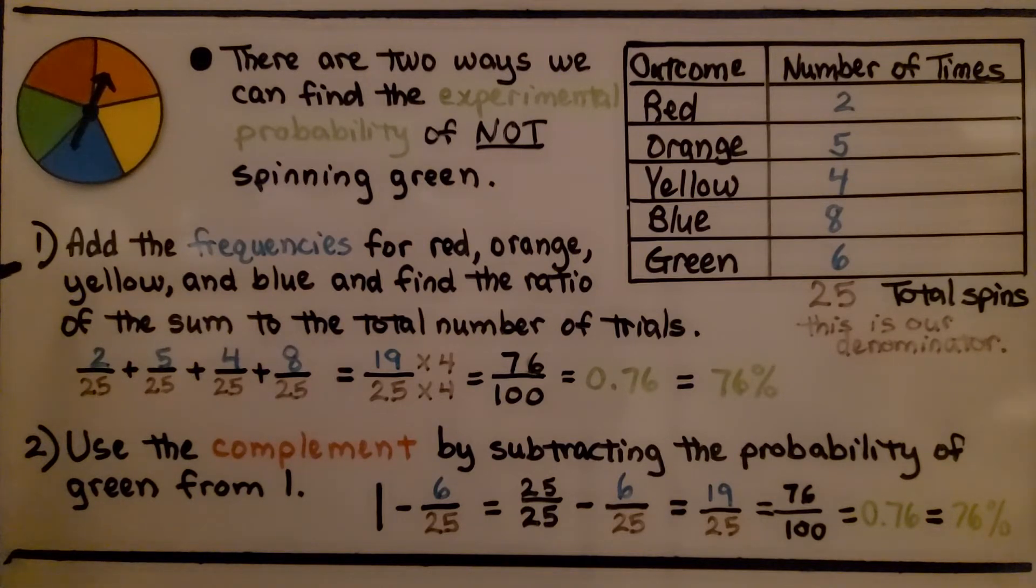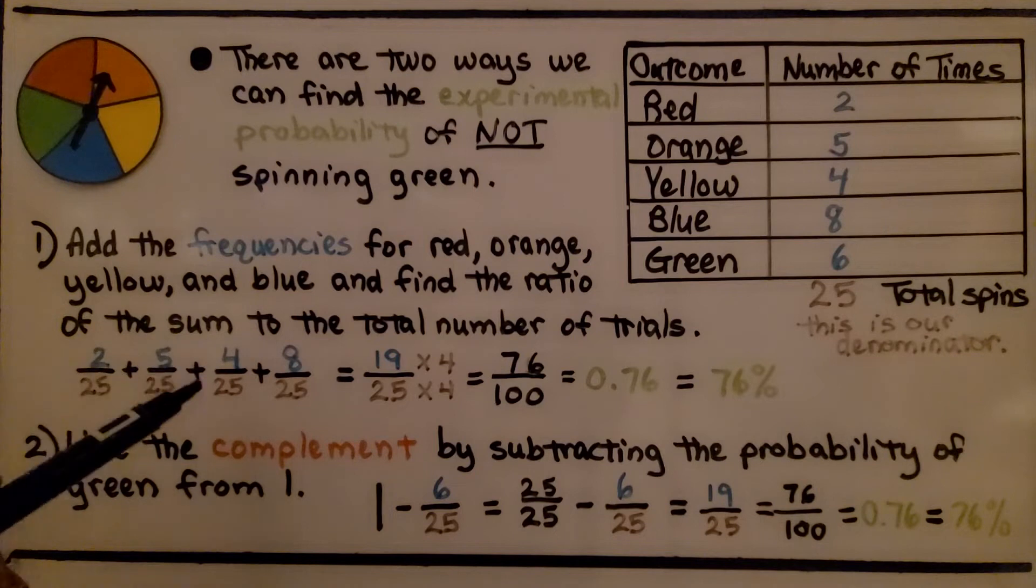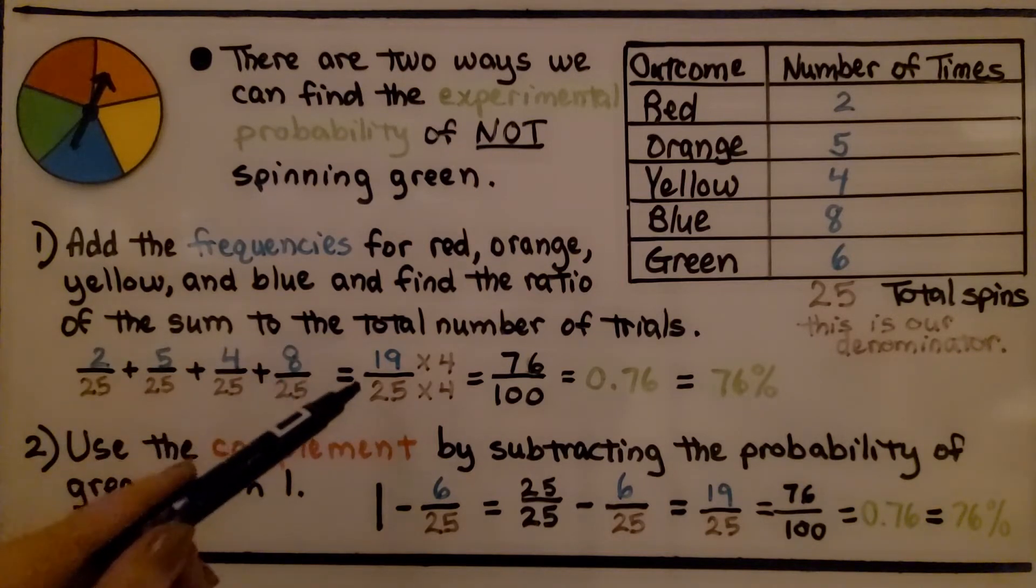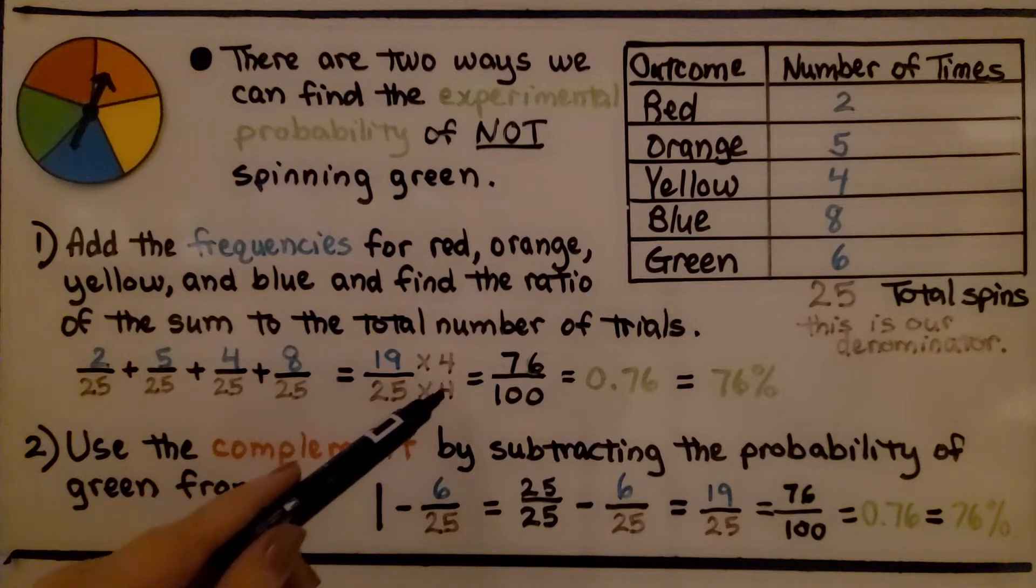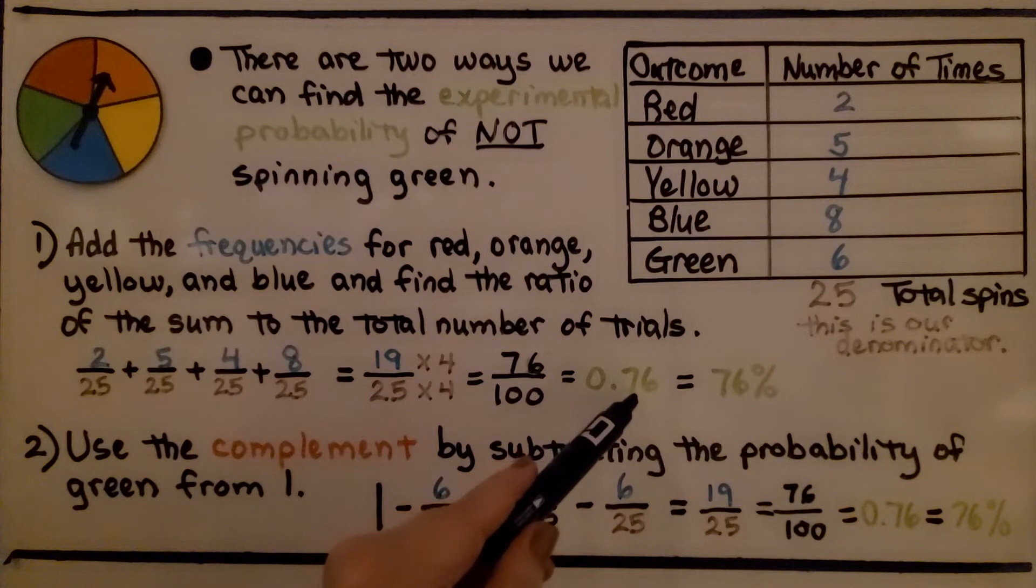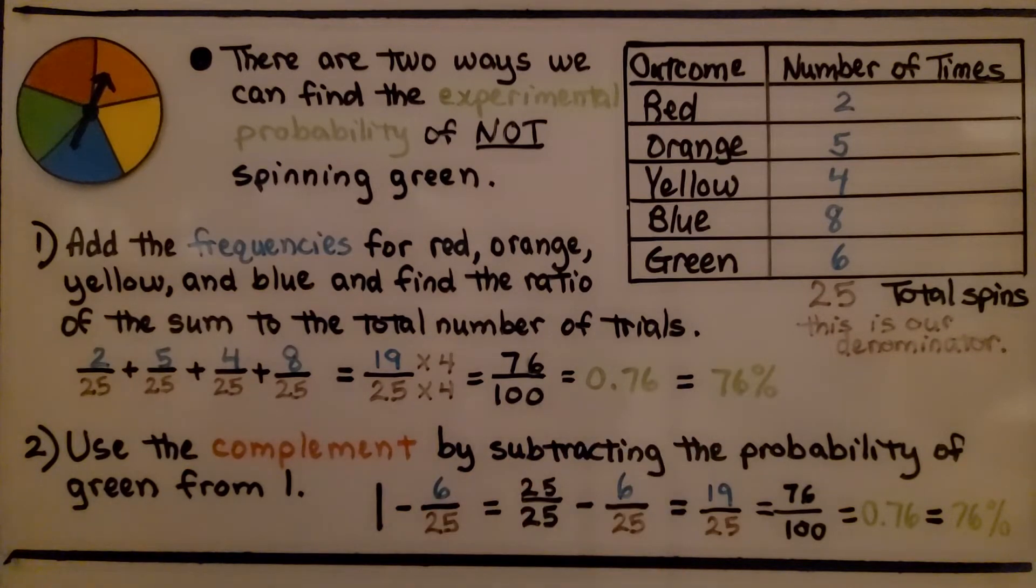So the first way is we could add the frequencies for red, orange, yellow, and blue, and find the ratio of the sum to the total number of trials. So we have red, orange, yellow, and blue, and totaling them would give us nineteen twenty-fifths, which would give us seventy-six hundredths, or seventy-six percent.